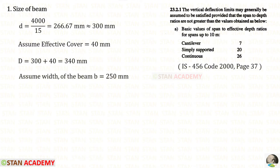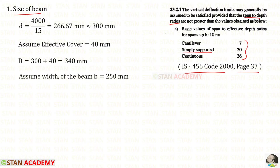The first step in the design is to assign the size of the beam. We need to open the codebook at page number 37. The span-to-depth ratio should not be greater than the specified limits. Since the type of beam is not mentioned in the question, it should be a simply supported beam. For that, the ratio should not be more than 20. We can assume the ratio as 15, so the effective depth d will be span 4000 divided by ratio 15, giving 266.67 millimeter, which we round to 300 millimeter.